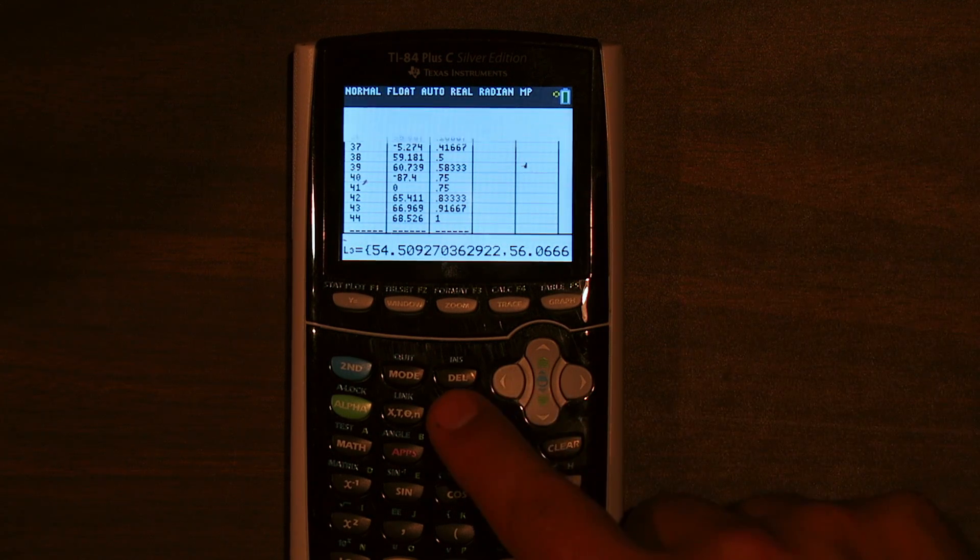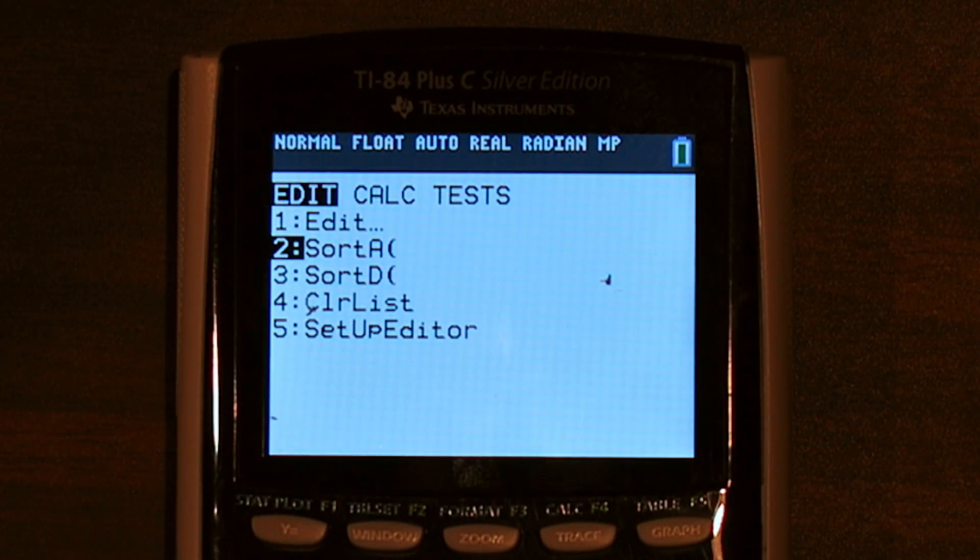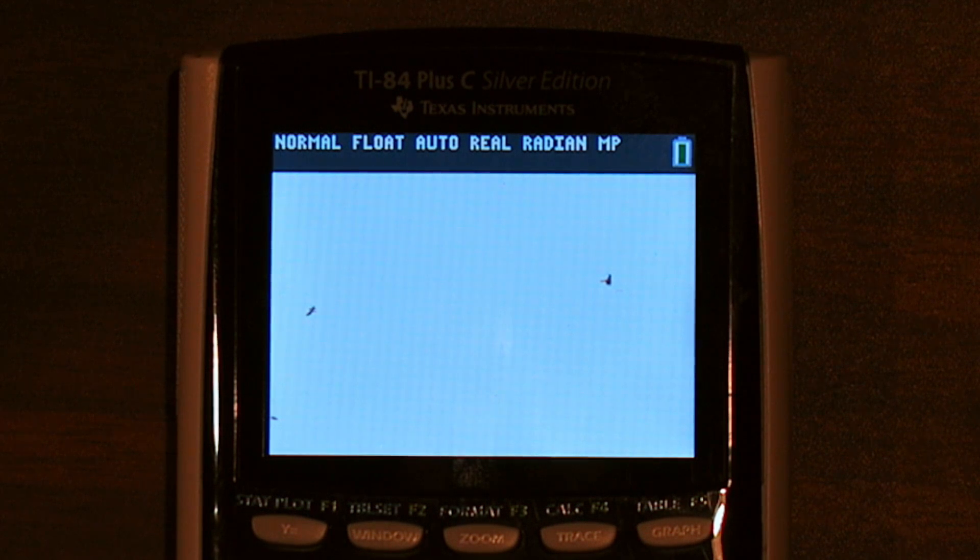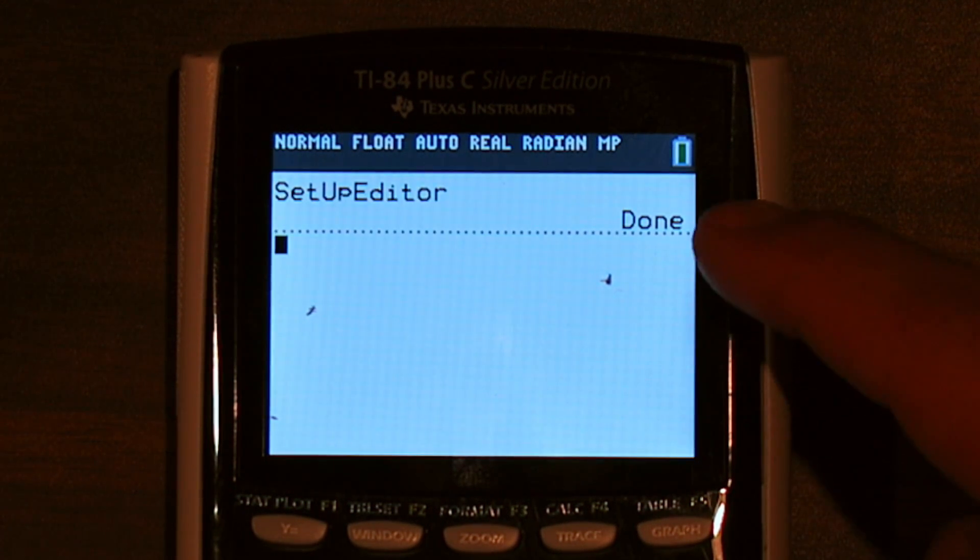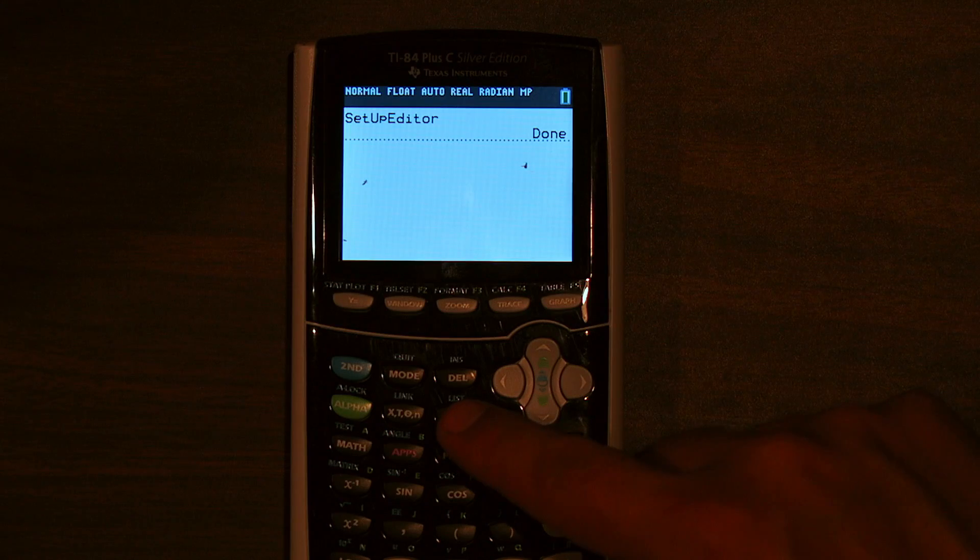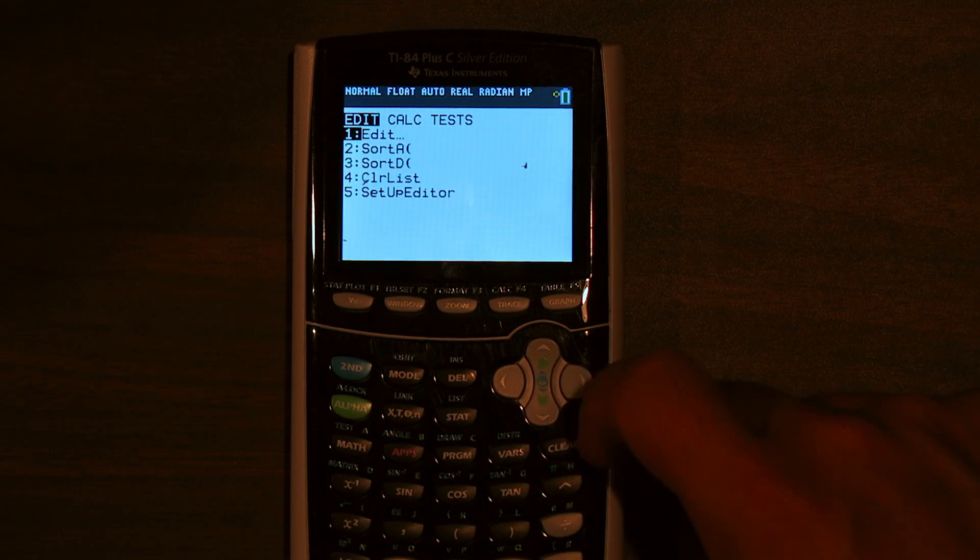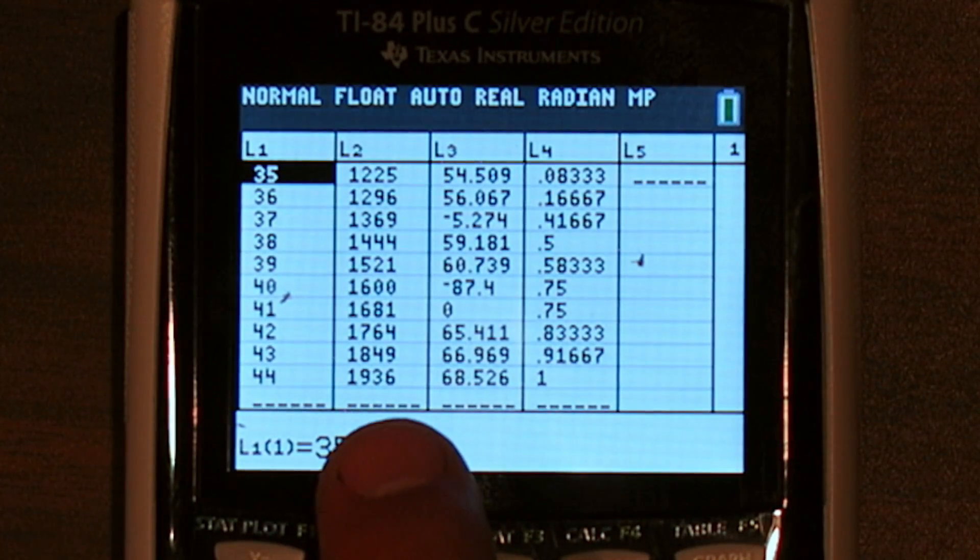Let me show you how to fix that. Press stat, then go down to setup editor, press enter, and it says done. So if I go to stat again and I go back to my list, I now see list 2 is back.